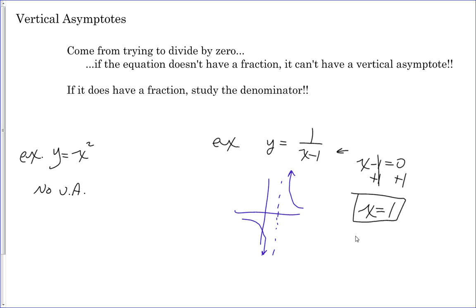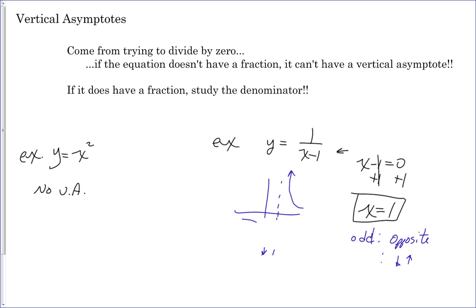Remember: odd means opposite — the two sides face opposite directions. And positive means down-up, so the left side goes down and the right side goes up.